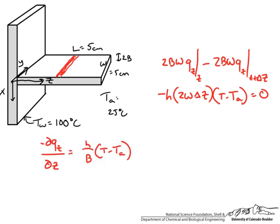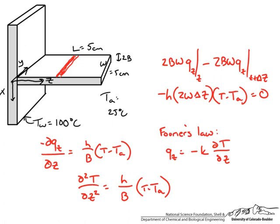We now have a first-order differential of heat flux in z with respect to z. Inserting Fourier's law — which relates heat flux to thermal conductivity and temperature gradient — into this differential equation, we obtain a second-order ODE. To solve this second-order differential equation, we need two boundary conditions.